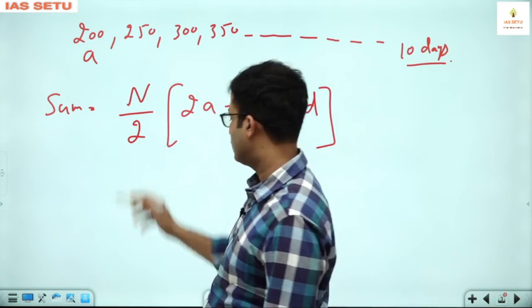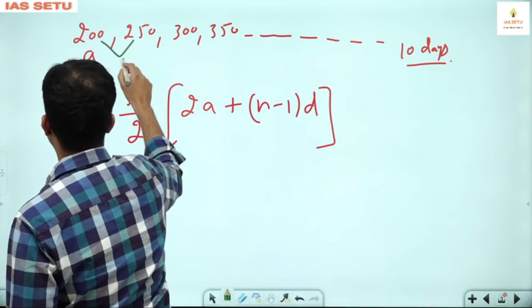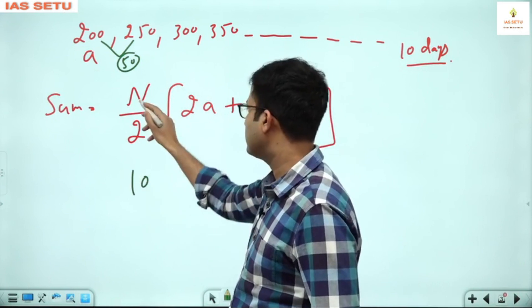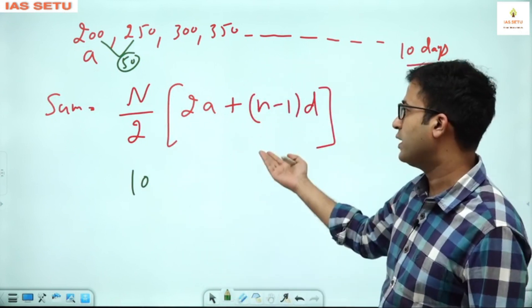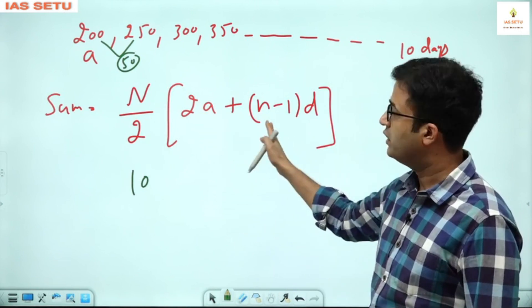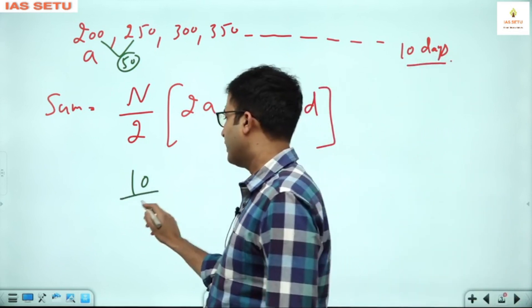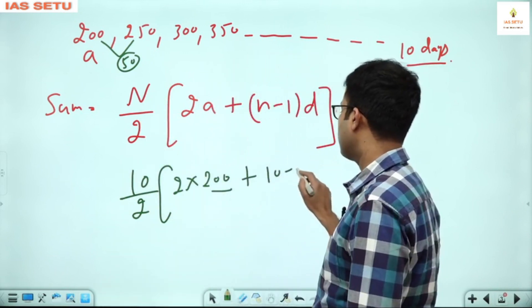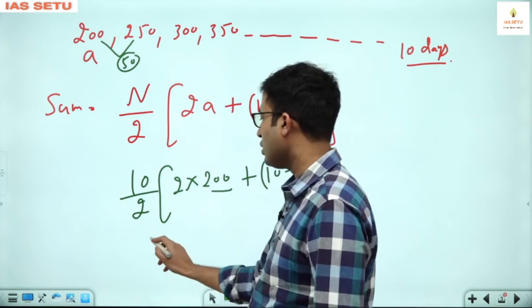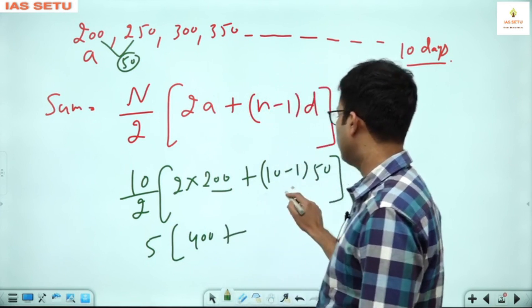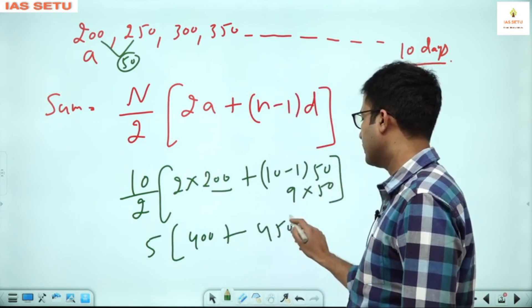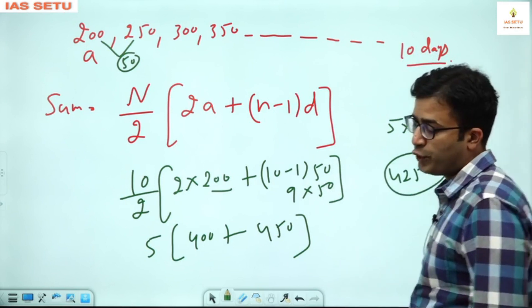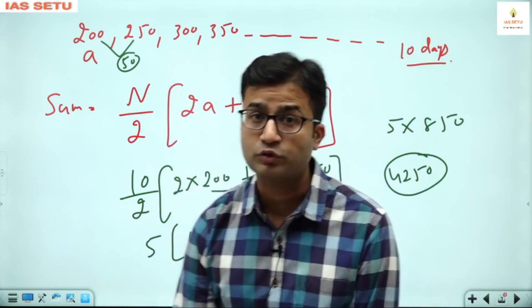D is the common difference. What is D here? 50 rupees — the difference of 200 and 250 is 50. Number of days is 10, so value of N is 10. So: 10 by 2, into 2 into 200 plus 10 minus 1 into 50. This is 5 into 400 plus 9 into 50, which is 450. So it is 5 into 850. We get 4250.